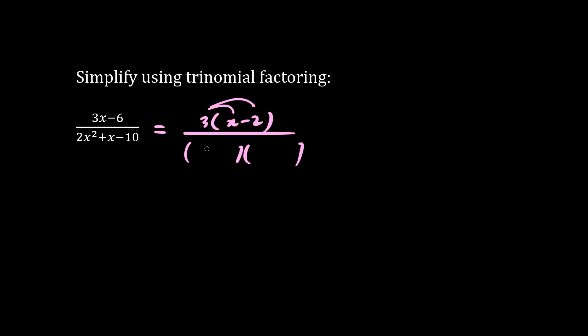As for the bottom, let's use trinomial factoring. We have 2x times x is 2x squared. And what times what becomes negative 10? Let's try 5 and 2. And we'll put the plus sign here and the minus sign here. Through trial and error, we have negative 4x plus 5x indeed is positive 1x. So this is correct.